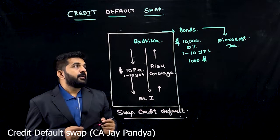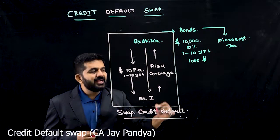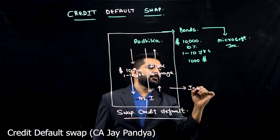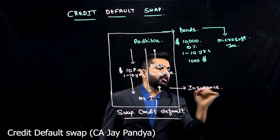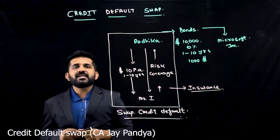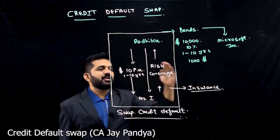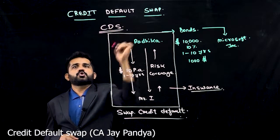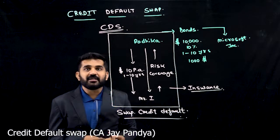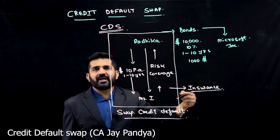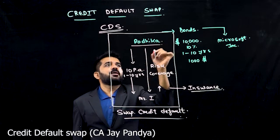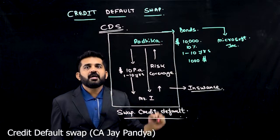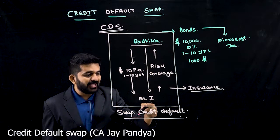Now, you will say, sir, this is an insurance contract. I absolutely agree — this is an insurance contract. What is the basic difference between an insurance contract and a CDS credit default swap? In an insurance contract, Radhika needs to be the owner of this bond. In our example, we have taken that she is the owner of the bond.